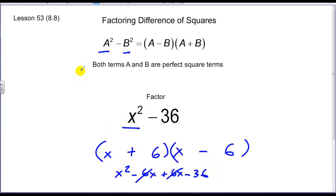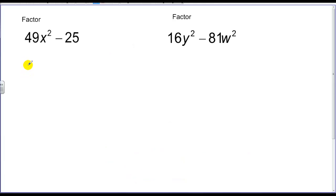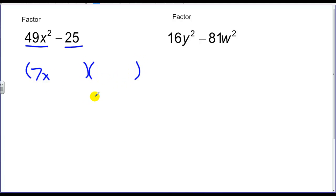Factoring difference of squares is going to be the same throughout. We just have to identify what the square root of each perfect square is. So here are a couple more cases. We're looking at 49x squared minus 25. The square root of 49 is 7, the square root of x squared is x — so those are the first terms. The square root of 25 is 5.